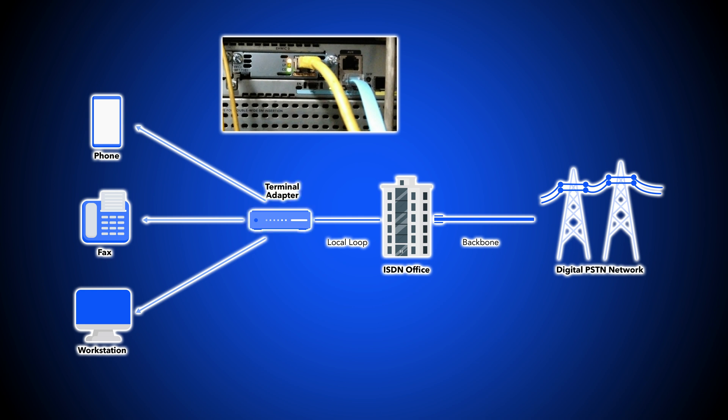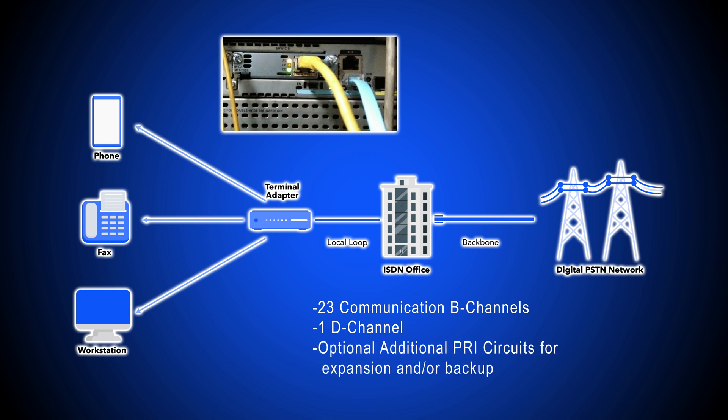Each PRI circuit includes 23 communication channels, or B channels, plus one more channel, the D channel. Users can add additional PRI circuits to link multiple PBX systems together, access an additional 23 channels, or act as a failover in case of a service outage. PRI lines, also called PRI trunks, are compatible with both analog and IP PBX phone systems, but always require a physical connection to the network.